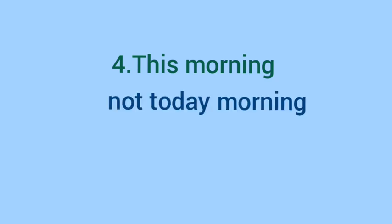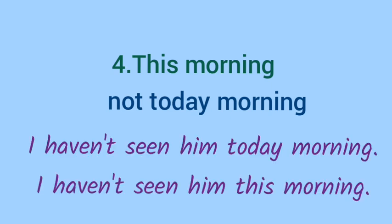Number 4: 'this morning' is correct, not 'today morning.' You have to use 'this morning' in a sentence, not 'today morning.' For example: 'I haven't seen him today morning' is wrong. 'I haven't seen him this morning' is right. In the first sentence, 'today' is written, which is why it is wrong. In the second sentence, 'this' is used, which is why it is right.